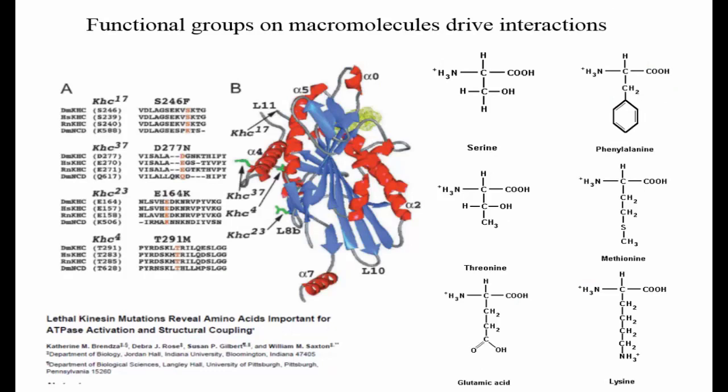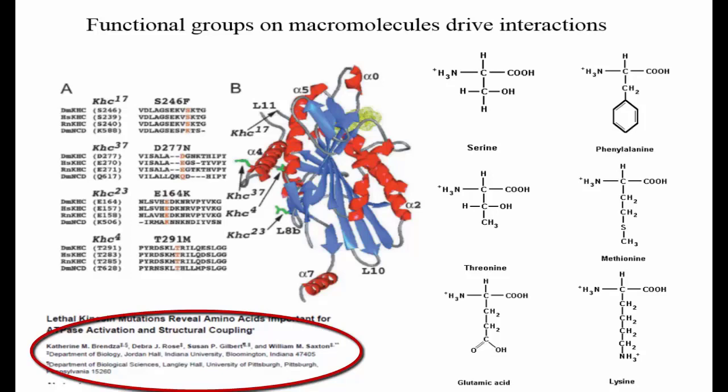Let's zoom in to one of the globular head regions of kinesin. This is the region that binds to the microtubule and walks like feet down the microtubule. These feet actually have to bind and cleave ATP in order to generate the energy that kinesin needs to walk down the microtubule. In a study by a group at Indiana University, scientists discovered that if you mutated certain amino acid residues in the head region of kinesin, you could render this enzyme ineffective or increase its efficiency.